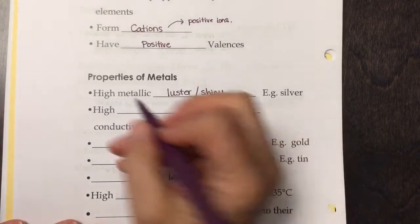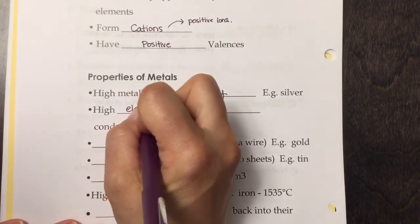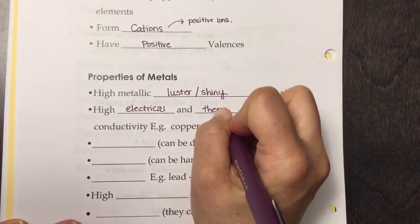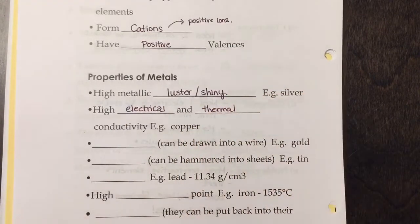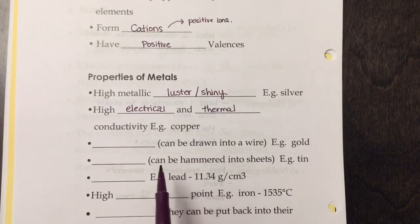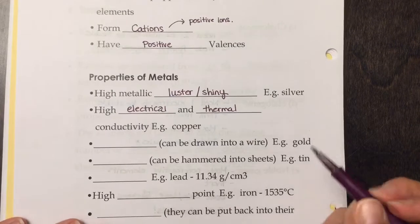They have high electrical and thermal conductivity. That's why we use copper wiring to wire our houses so we can flow electricity around.